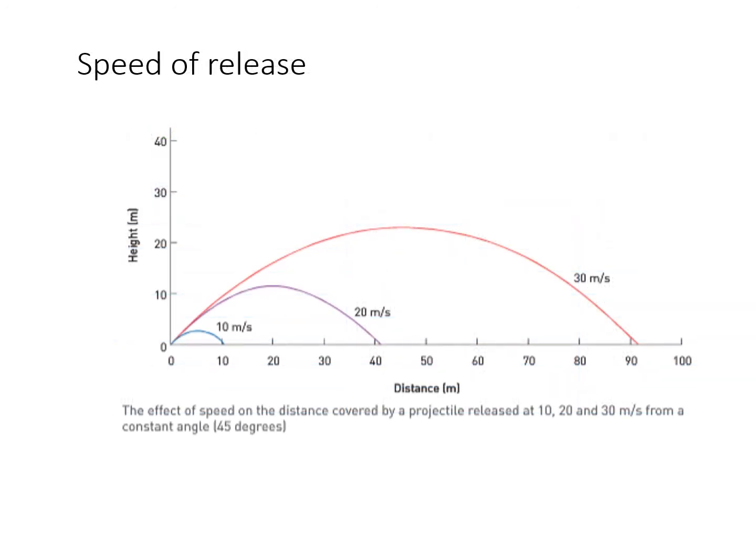And here's a graph to show you that same concept with a smaller data set, so the effect of speed on distance. So the height looks to be the same, the angle is a constant of 45 degrees, which we know is optimum. So as we increase speed of release, so too do we increase distance.